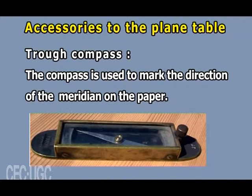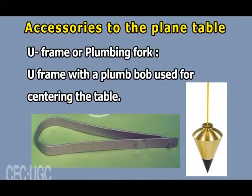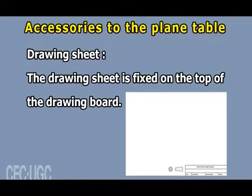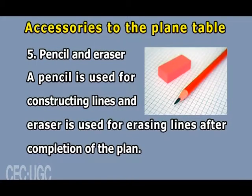The compass is used to mark the direction of the meridian on the paper. The U-frame or plumbing fork — that is a U-frame with a plumb bob — is used for centering the table. The spirit level or tube is used to level the plane table. Drawing sheets are fixed on top of the drawing board. Pencil and eraser are used for constructing lines, and the eraser is used for erasing lines after completion of the plan.